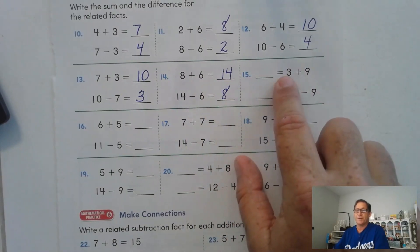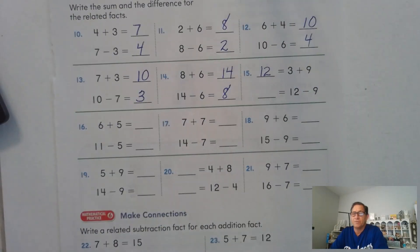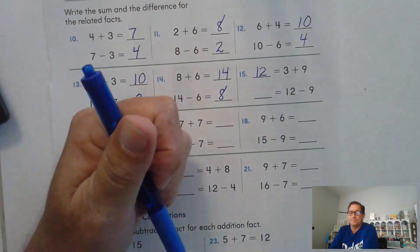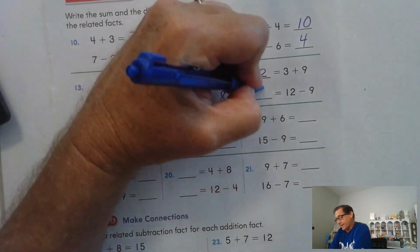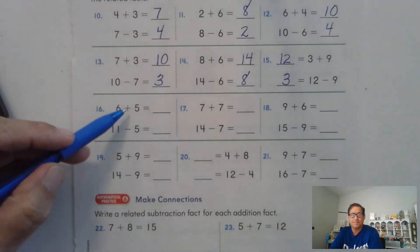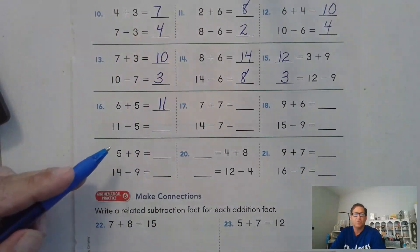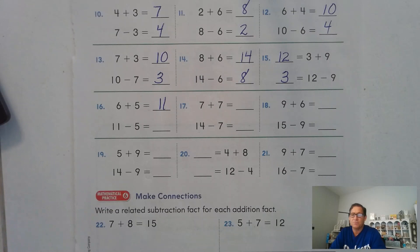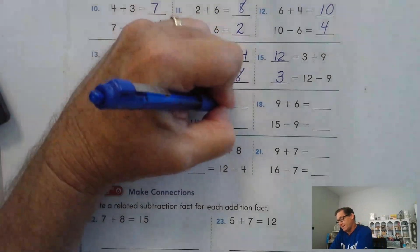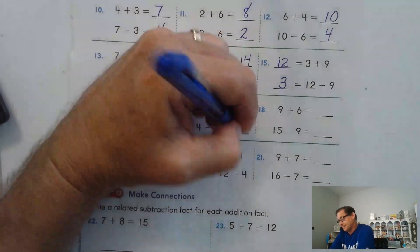Nine plus three is 12. So 12 equals three plus nine. What is 12 minus nine? Nine plus what is 12? Three. Six plus five is 11 — five plus five is 10, plus one more is 11. So 11 take away five: five plus what is 11? Six. Seven plus seven is a doubles fact — 14. So 14 take away seven: seven plus what is 14? Seven.